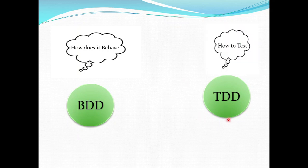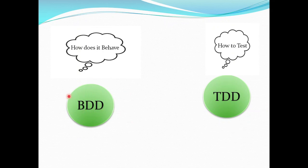As you know, in TDD we focus on how to test an application, but in BDD we write tests based on the behavior of the application. This is the main difference between BDD and TDD. We can say that BDD is the extension of TDD, but it mainly focuses on the behavior of the application.